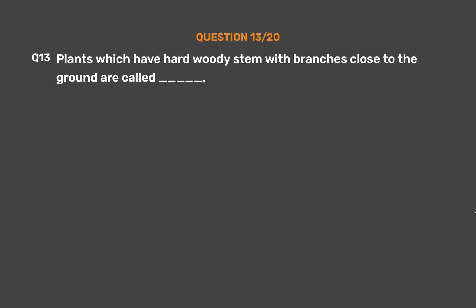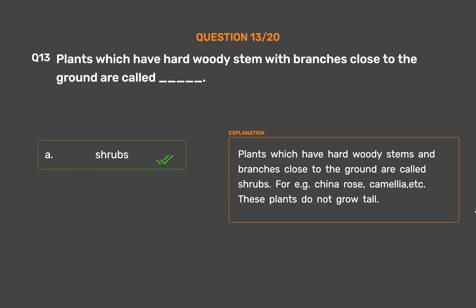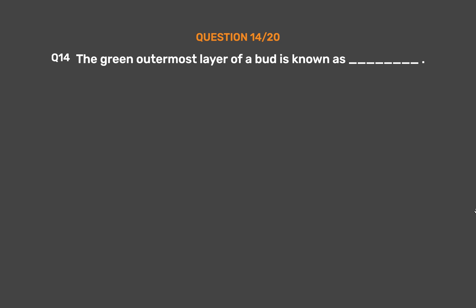Question 13: Plants which have hard woody stems with branches close to the ground are called ___. Option A: Shrubs, Option B: Creepers, Option C: Herbs. The correct answer is Option A, Shrubs. Plants which have hard woody stems and branches close to the ground are called shrubs — for example, China rose, camellia, etc. These plants do not grow tall.